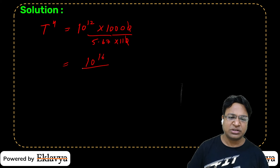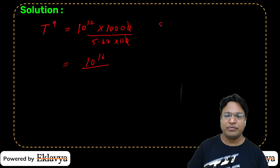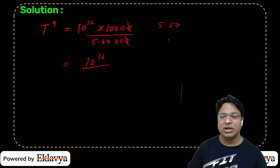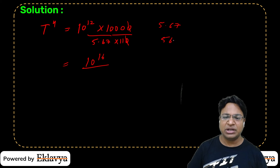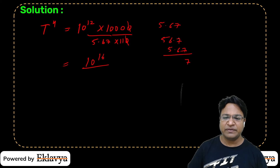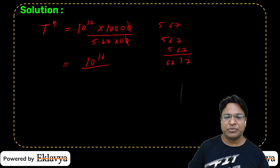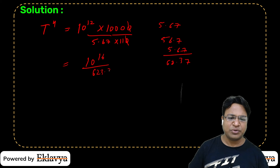So T⁴ = 10¹⁶ / (5.67 × 110) = 10¹⁶ / 623.7. We write this as approximately 10¹²/623.7 × 10⁴. Then 1000/623.7 ≈ 1.6, so T⁴ ≈ 1.6 × 10¹³, which gives T⁴ ≈ 625 × 10¹² (since 625 = 5⁴ and 10¹² = (10³)⁴).